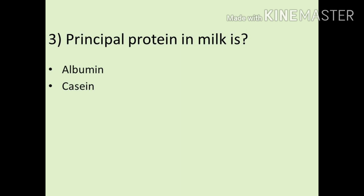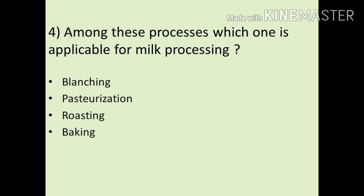Question number 3: The principal protein in milk is? The options are albumin, casein. The answer is casein.